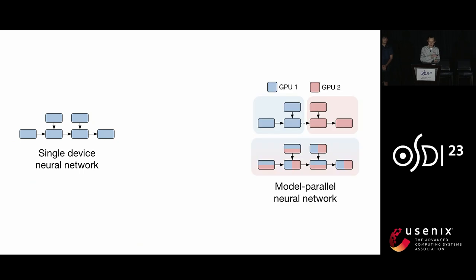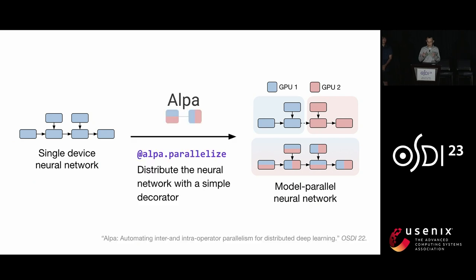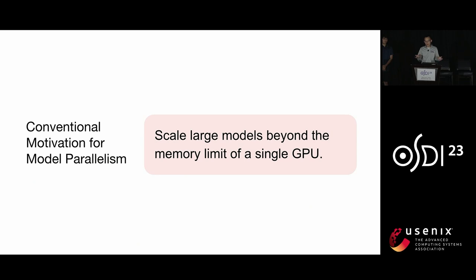We partition a single neural network and distribute the parts to different devices. Model parallelism is complicated — for different neural networks and cluster setups, the optimal partition can be completely different. This is also why two years ago we started to build the Alpa compiler to help people distribute neural networks with model parallelism. As a brief summary, the conventional motivation for model parallelism is to scale large models beyond the memory limit of a single GPU.